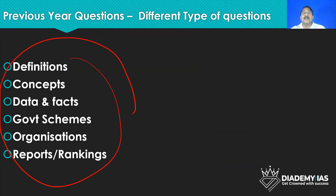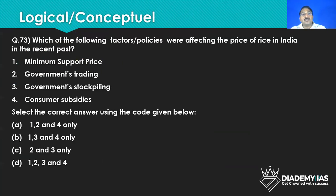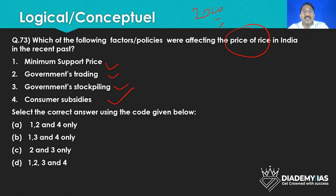Most questions in any category will directly ask you a definition. Like here, capital adequacy ratio is a direct definition question. Then another type is the conceptual question — they are asking conceptual questions for money and banking. If we think about each of these options, the questions are very, very logical and conceptual.